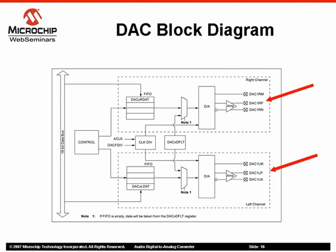Data will be read from the FIFO every 256 DAC clock cycles, and if the FIFO becomes empty — for example, if the DMA module or processor cannot provide data in a timely manner — the DAC accepts alternate data from the DAC default data register. This register provides a default input value that represents a safe output voltage, which is often the midpoint value or a zero value.